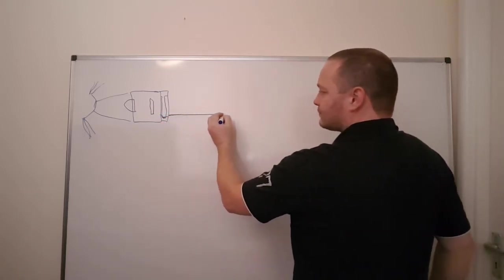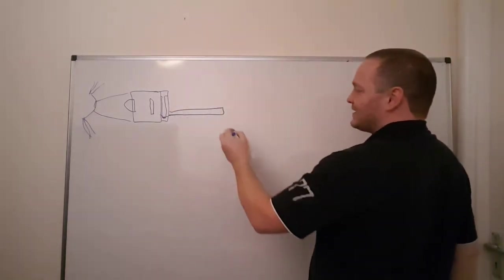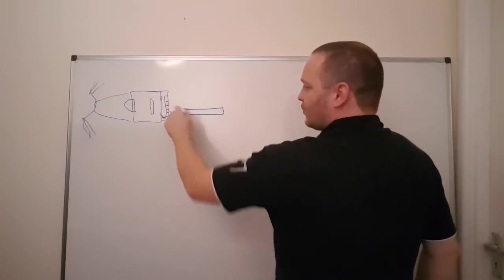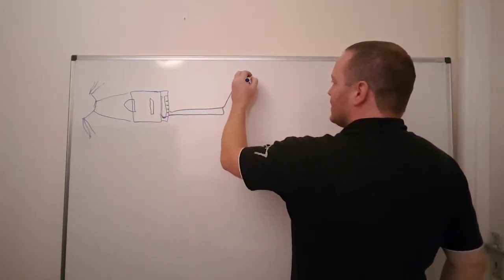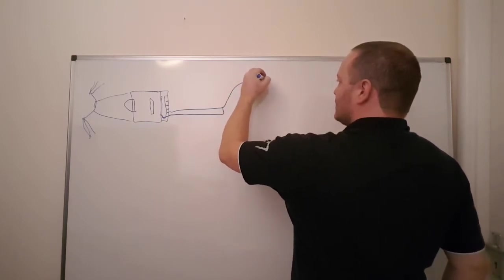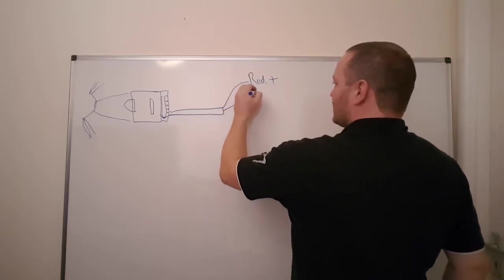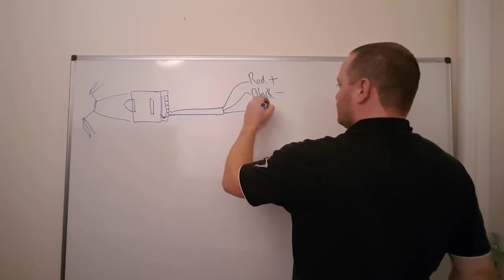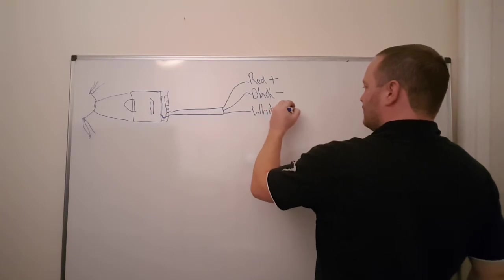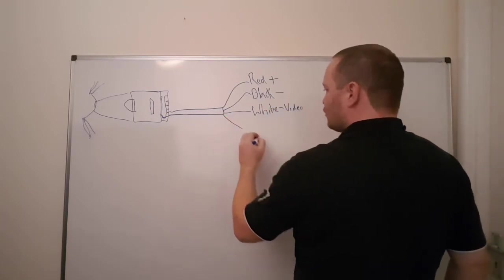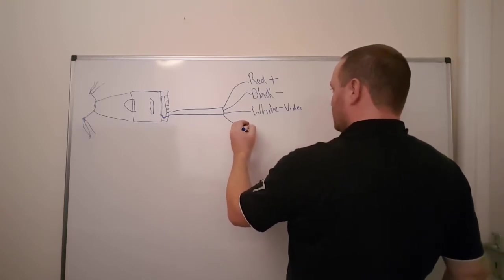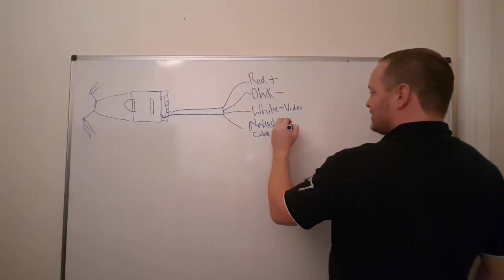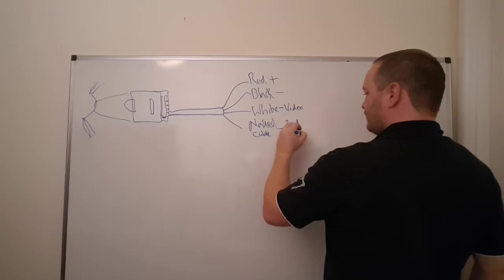Now what comes off here is four connectors, four wires or terminals, whichever way you want to call them, and it's soldered in. Generally what you've got is one which is red, that's our positive. You've got one that comes off which is black, that's our negative. You've got a white cable, which is our video feed. And then you've got an unshrouded cable, we'll call it naked, we'll have a bit of a laugh. Naked cable. And that is a second negative.